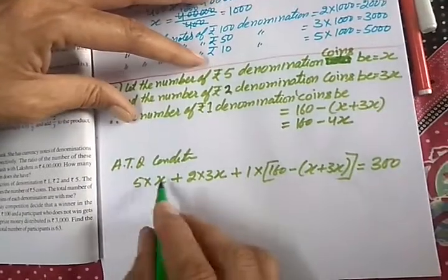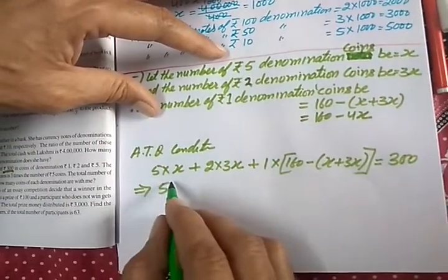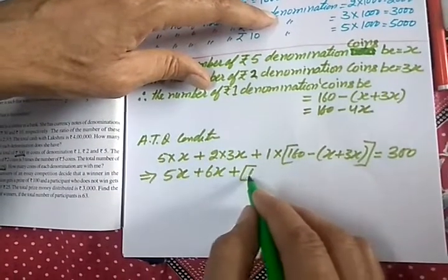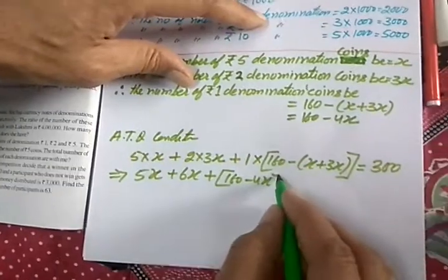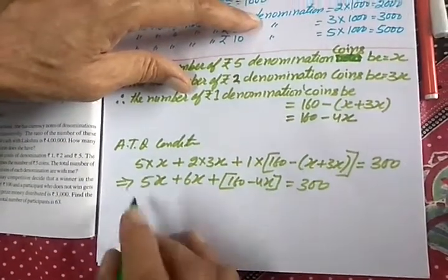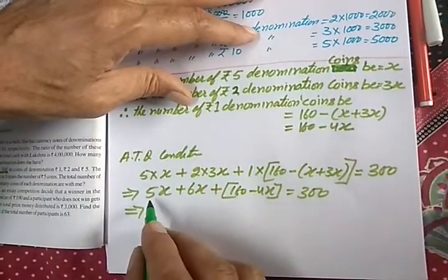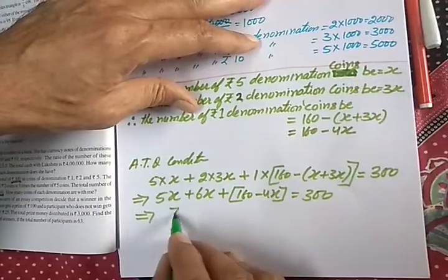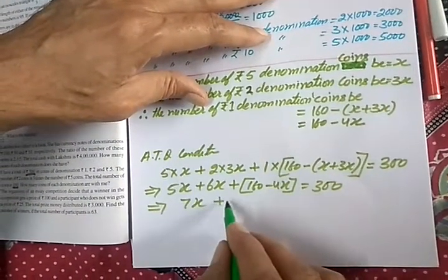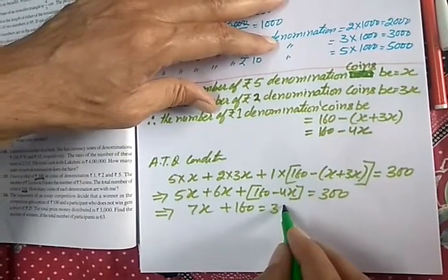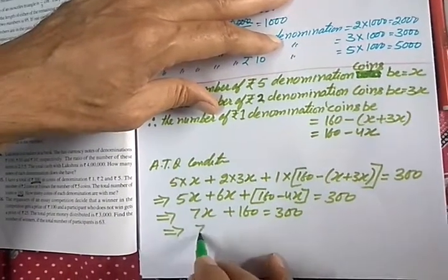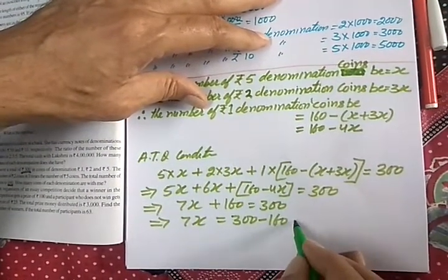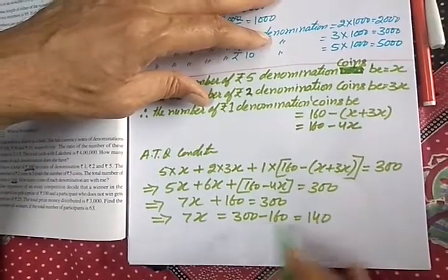This should give you ₹300. This means 5x plus 6x plus 1 into (160 minus 4x) is ₹300. This means 5 plus 6 is 11x, and if you take out 4 from 11 you get 7x. So 7x plus 160 will give you ₹300, which means 7x is equal to 300 minus 160, that is ₹140.